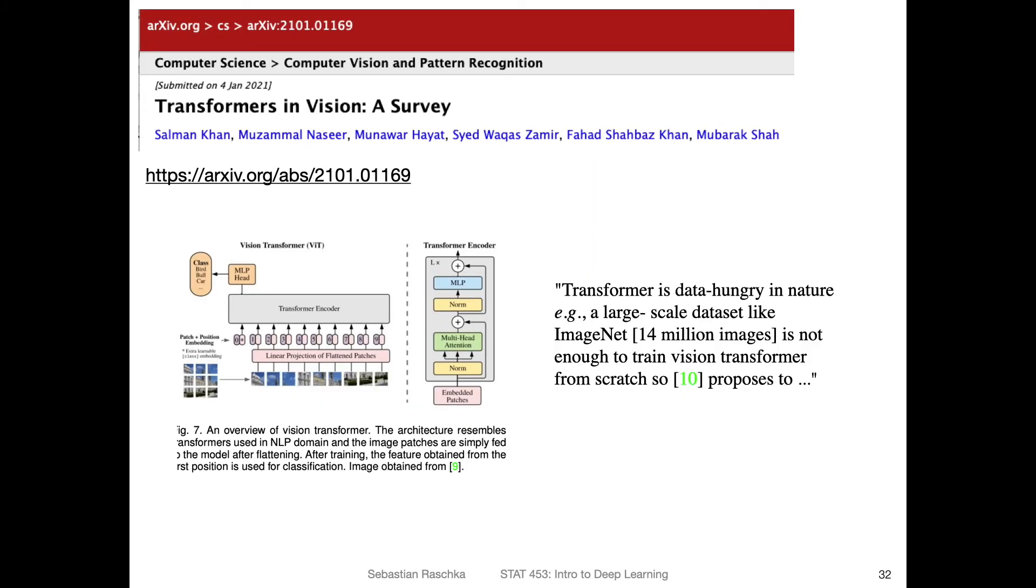Another trend recently - I recently read this paper here - was transformers in vision where people now also adopt these transformer architectures to computer vision. However, this is also really large scale. Here, for example, they say even ImageNet with 40 million images is not enough to train a vision transformer. So it's really something that is mostly out of reach for academic research.